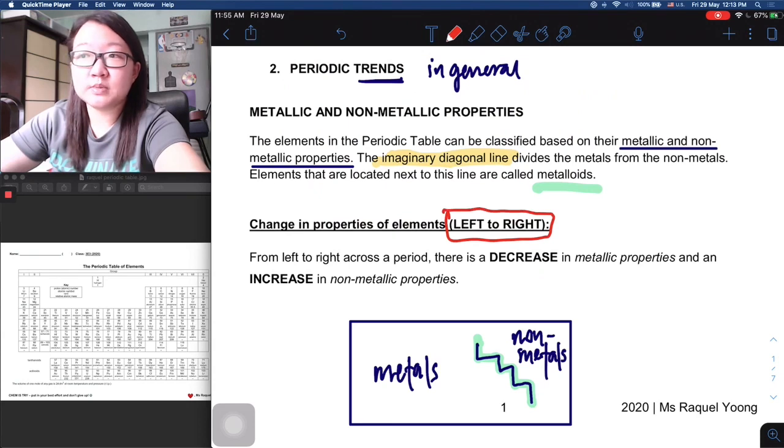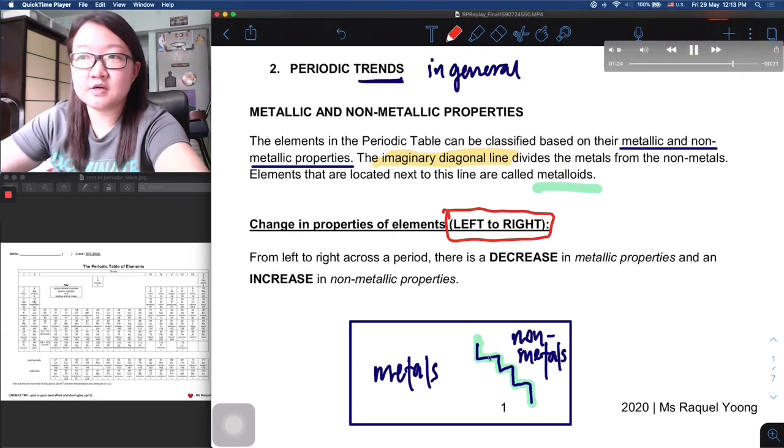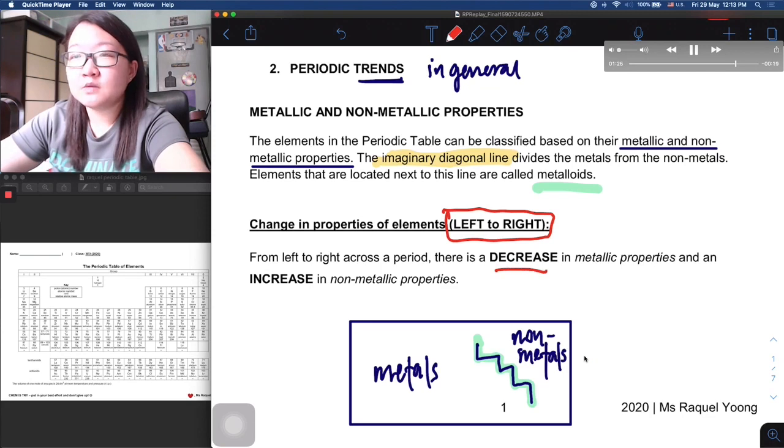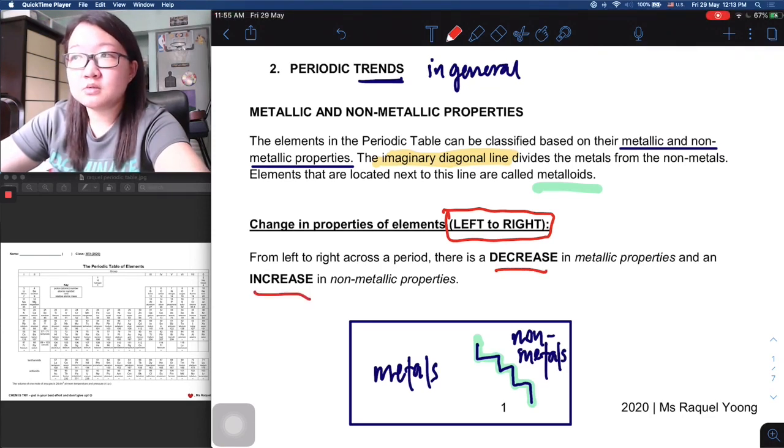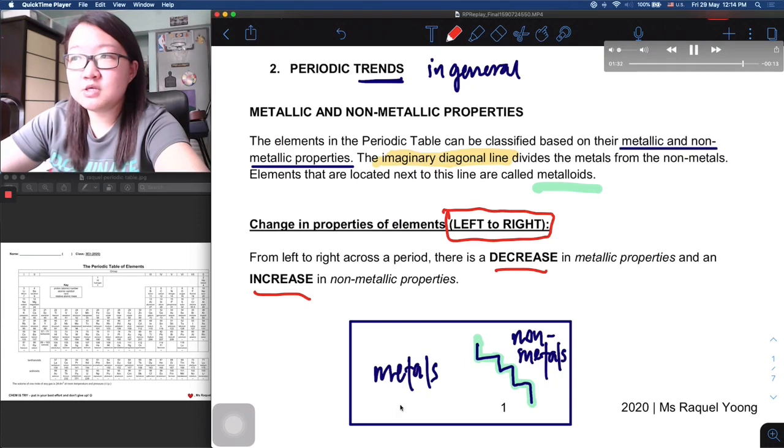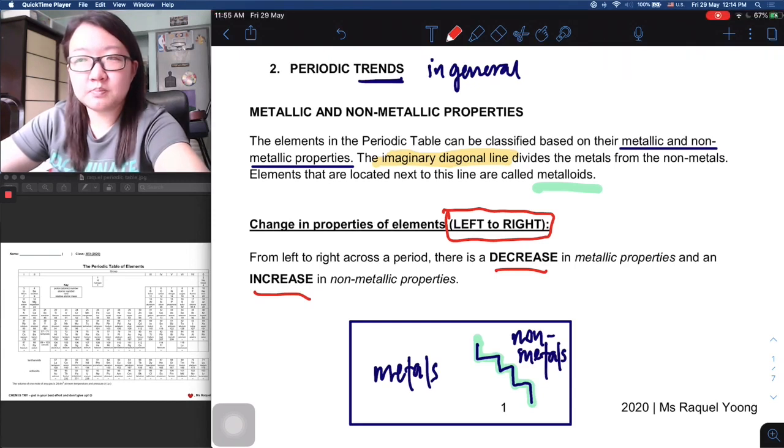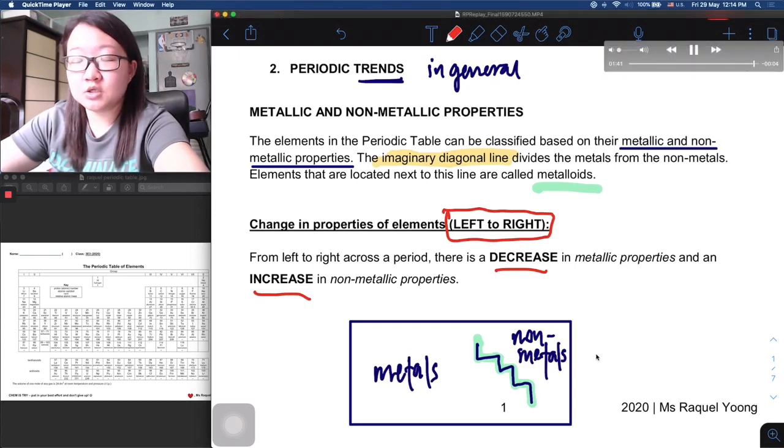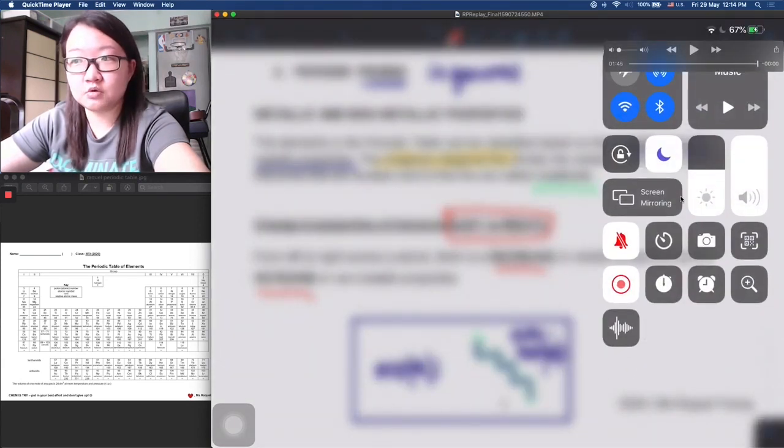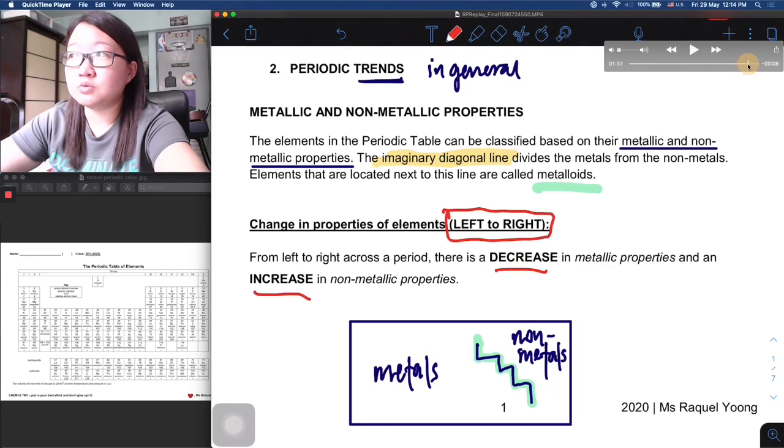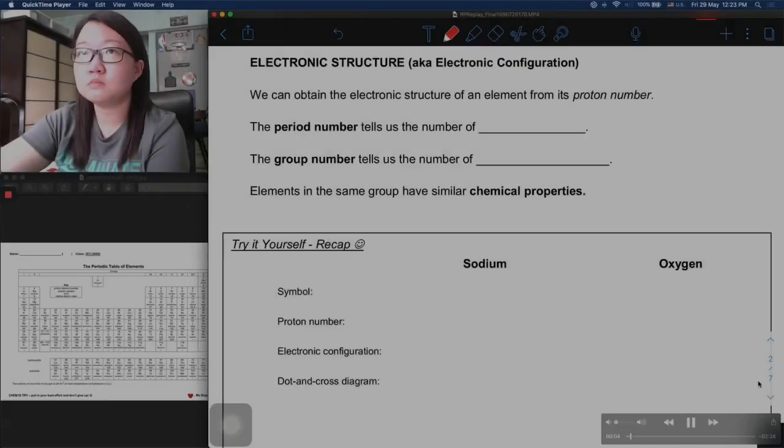Moving on to the next part, as we go from the left-hand side of the periodic table to the right-hand side, you will notice that there is some change in properties. Namely, there will be a decrease in the metallic properties and an increase in the non-metallic properties. This particular point is not that difficult to grasp - as you move from left to right, you go from metallic more to non-metallic.